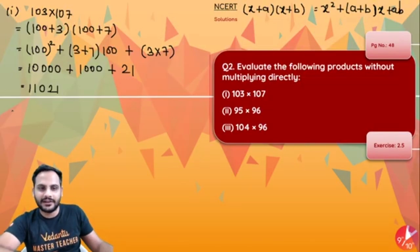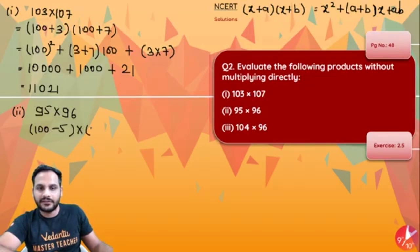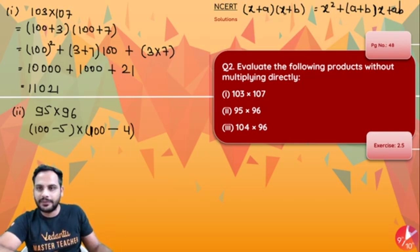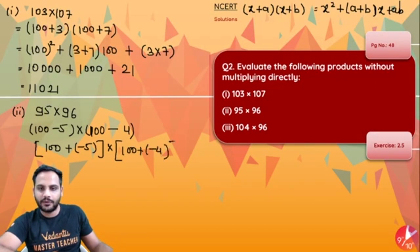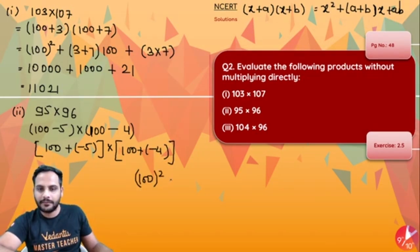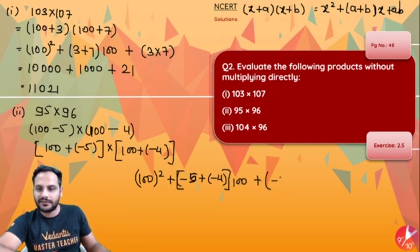The second one is 95 into 96. Again, both numbers are very close to 100. I write 95 as 100 minus 5, and 96 as 100 minus 4. Using the identity (x + a)(x + b), this becomes (100 + (−5))(100 + (−4)), so x² + (a + b)x + ab gives: 100² + (−5 + −4)×100 + (−5)(−4).